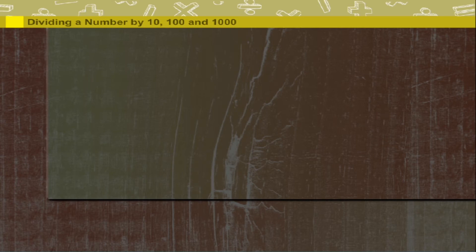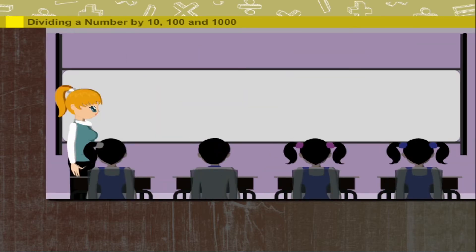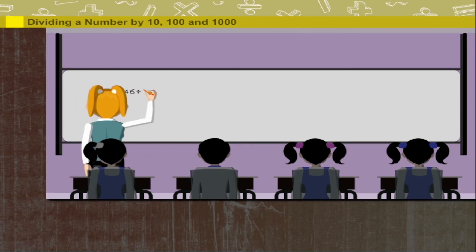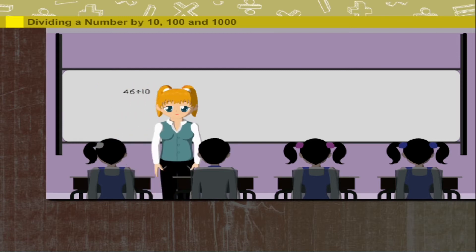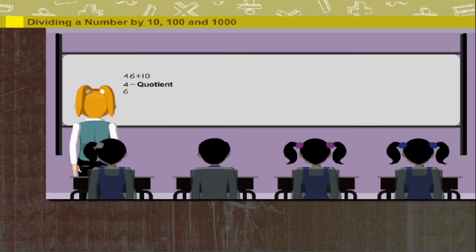Dividing a number by 10, 100 and 1000. Tita Nancy is in her class and she puts the question on the board. 46 divided by 10. 4 is the quotient or the answer and 6 is the remainder.